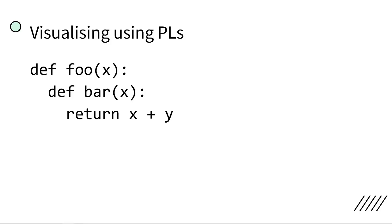Here, you can see I declared a function called foo. However, inside that function, I declared another function. They both use x as a parameter. So where is this x bound to? Is x bound to the inner or outer function? Actually, this x here — it is not bound to the first foo.